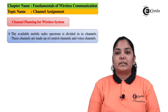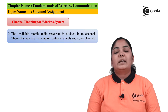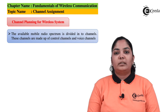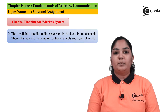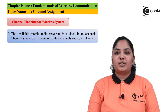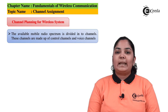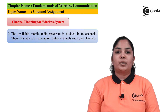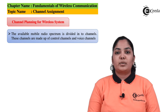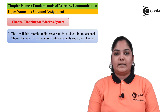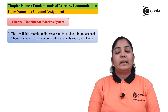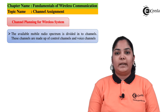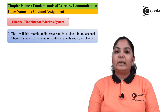The two types are voice channels and control channels. Control channels are only used for setup purposes such as call initiation and call request, and hence very few control channels are required. Ideally, only one control channel pair is required for one cell.